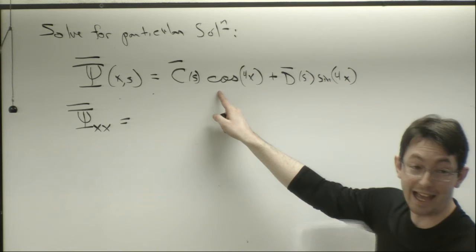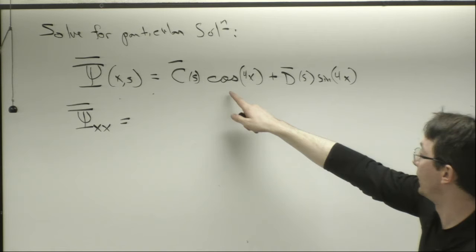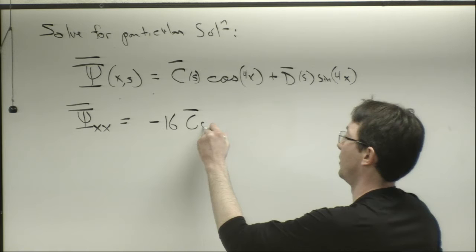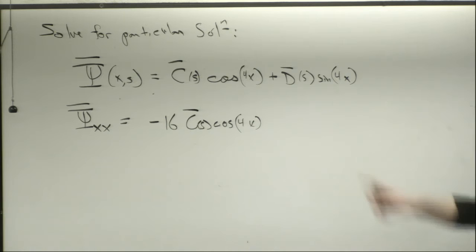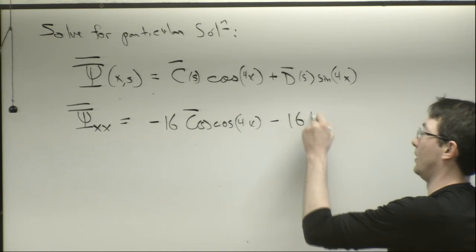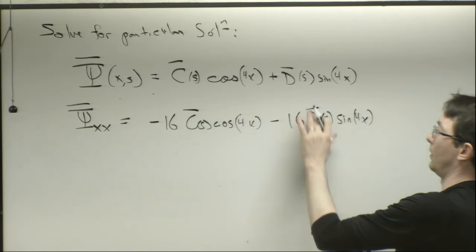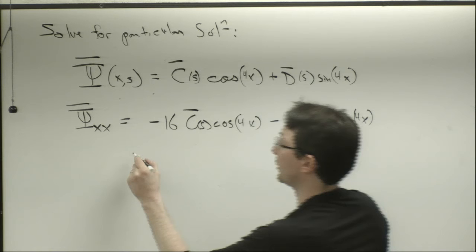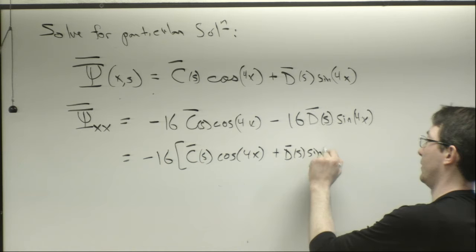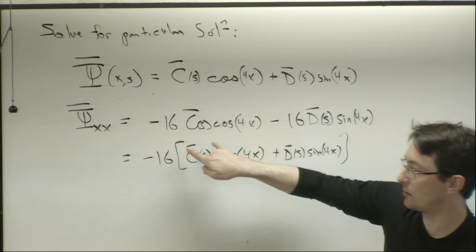Taking ψ_xx: the first derivative of c(s)·cos(4x) gives −4c(s)·sin(4x). Taking the second derivative gives −16c(s)·cos(4x). For the sine term: first derivative gives 4d(s)·cos(4x), second derivative gives −16d(s)·sin(4x). So ψ_xx equals −16c(s)·cos(4x) minus 16d(s)·sin(4x).